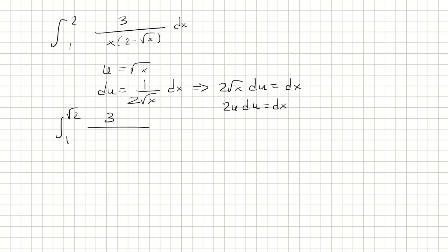So now we're going to replace dx with 2u du. And the bottom x is just, well, the square root of x is u. That means x is u squared. And I'm going to have 2 minus u. U's are going to cancel here.